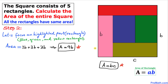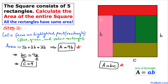We already know the area of this rectangle is 9b. Comparing the two equations: b × c = 9b. Dividing both sides by b, the b cancels on both sides, so c = 9. That means this side c is 9 units.